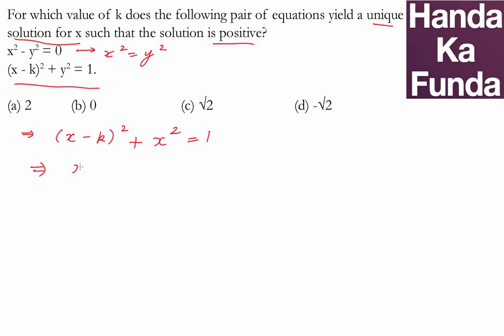So, what does this give me? This gives me x² - 2kx + k² + x², which is equal to 1.